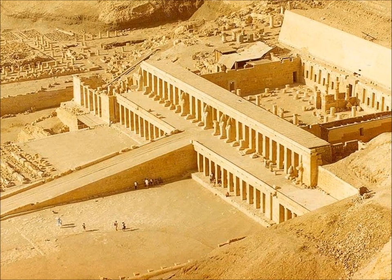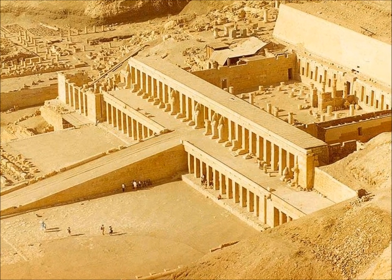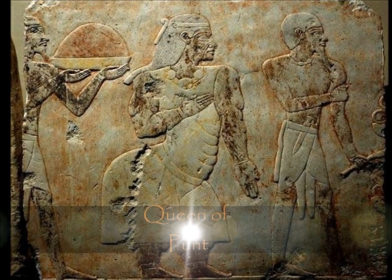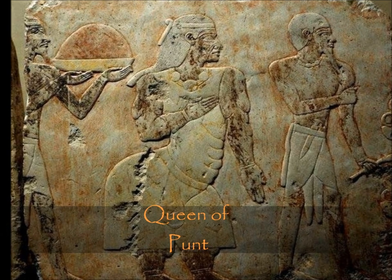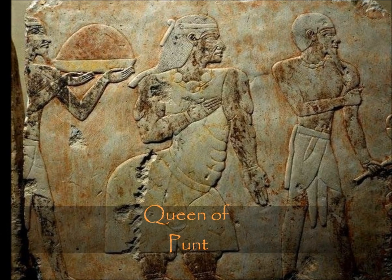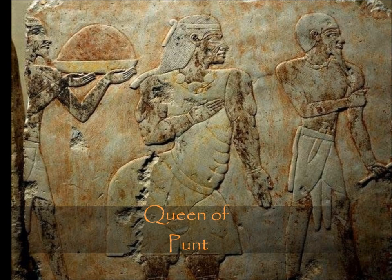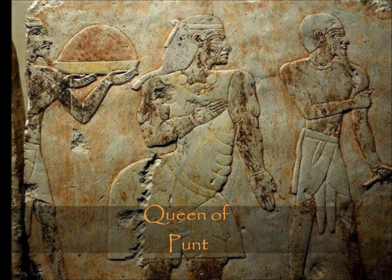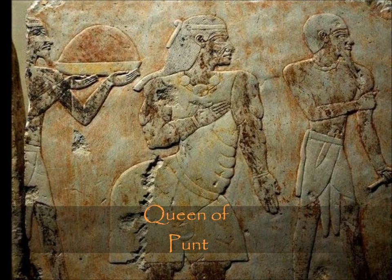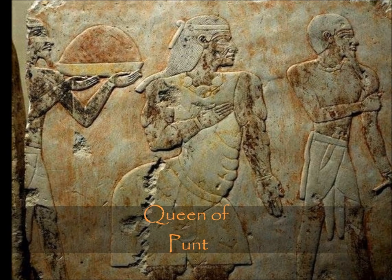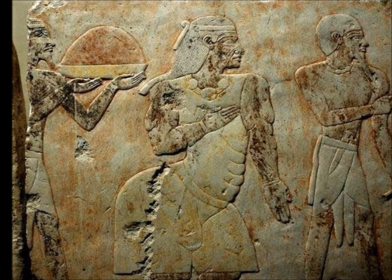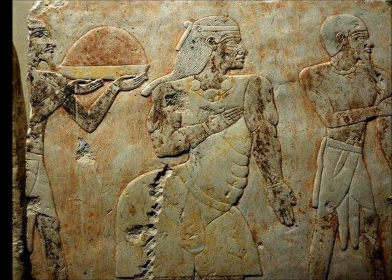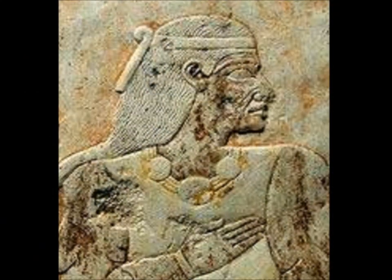In Hatshepsut's Mortuary Temple, the Queen of Punt bas-relief is a prime example of this. One can see the girth of her waist, which is, to put it candidly, obese, and she is vaguely seen with feminine attributes. One can clearly notice an ethnocentrism in female Egyptian art. Women that are natives of Egypt are shown to be alluring to the eye, as well as showing the concept of Ma'at, unlike women who are inhabitants of other civilizations, such as the Queen of Punt.